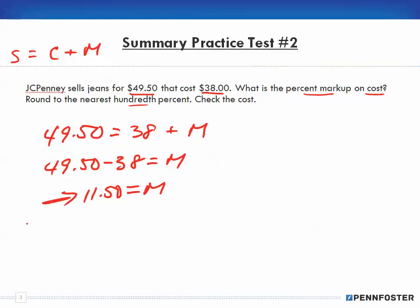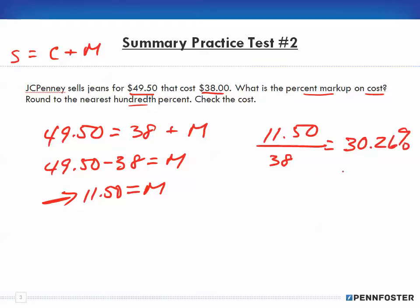We know $11.50 is our markup, but we're asked for the percent markup on the cost. So we take $11.50 and divide it by $38 to get 30.26% as the markup on the cost. That's the markup divided by the cost — going back to percentages from chapter six.